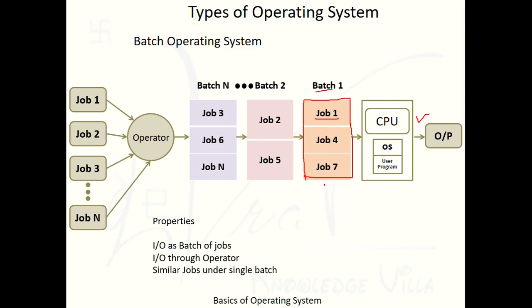For example, jobs 1, 4, and 7 are in a single batch because they share similar characteristics — like this batch requires resource R1. Then jobs 2 and 5 require resource R2, and jobs 3, 6, and N require resource R3. So the operator places different jobs into separate batches based on resource requirements and produces these batches as input to the computer system.